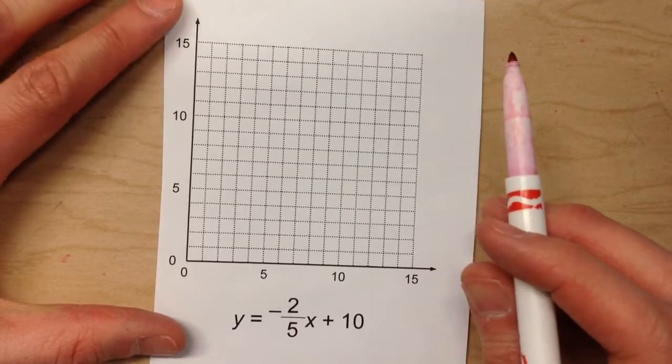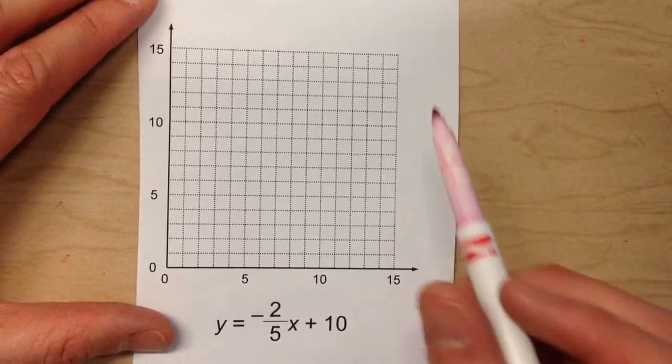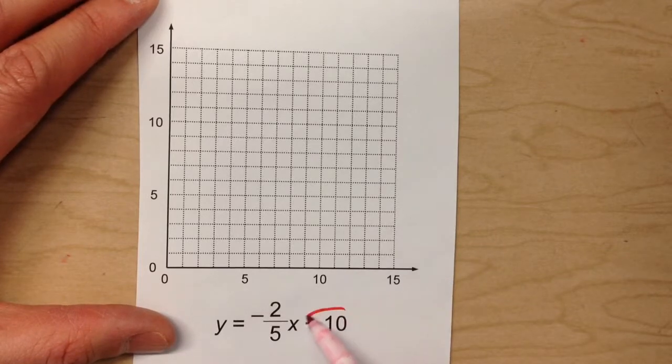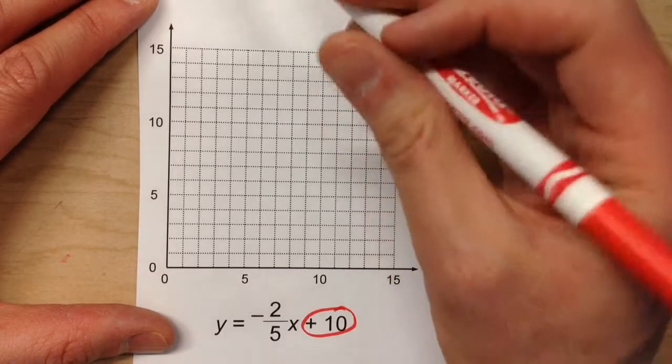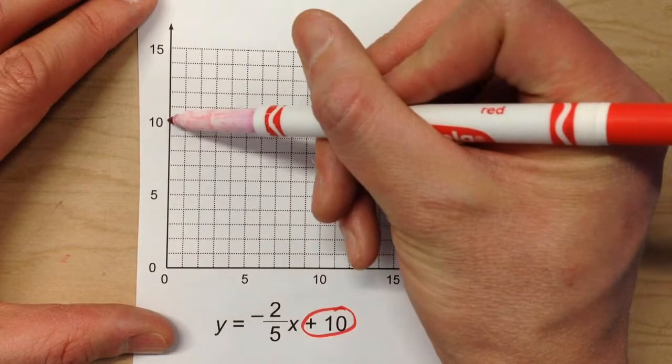But we start them off the same way we've been graphing them all along. So find your y-intercept, which is your starting point. That's positive 10. So on our axis, we're going to start at 10.